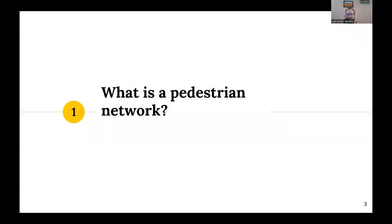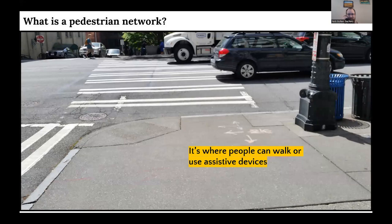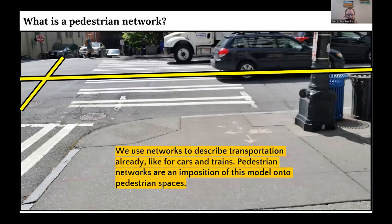So first, what is a pedestrian network in particular? Put really simply, it's just where people can walk or use assistive devices to get around. We use networks to describe transportation already, like for cars and trains. Pedestrian networks are an imposition of this same kind of model, but onto pedestrian spaces.